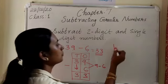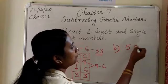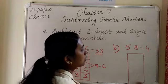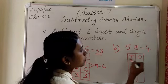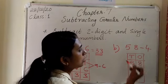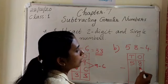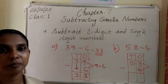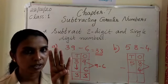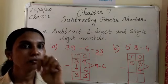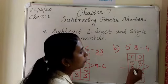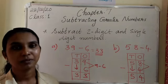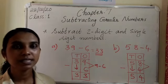One more question — B. 58 minus 4. Subtract. Write tens place and ones place. The first number is 58: 5 tens and 8 ones. The second number is 4 — write 4 in the ones place. What is 8 minus 4? 8 in your mind, 4 on a finger: 7, 6, 5, 4. Write the answer 4. Then bring down the 5. The answer is 54.